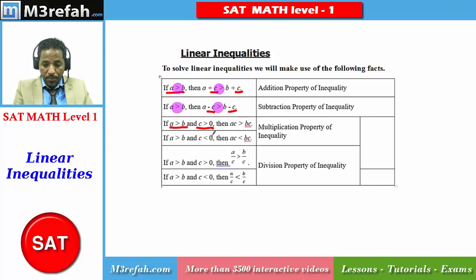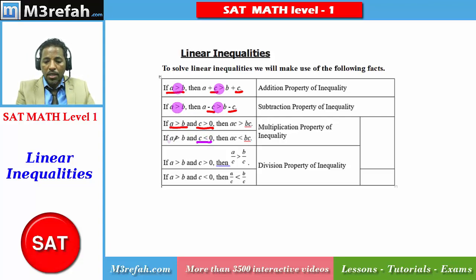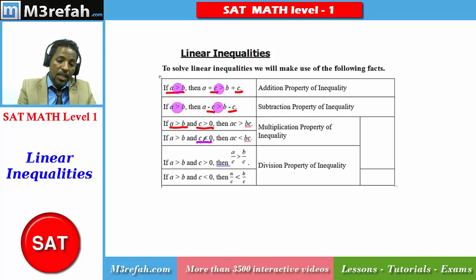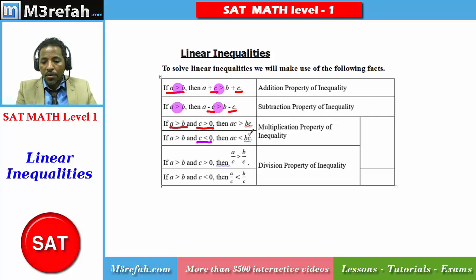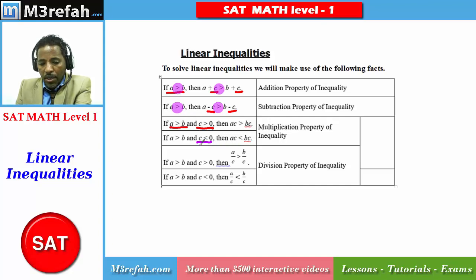But this case changes if the value of C is less than 0, meaning C is negative. So if A is greater than B and you multiply both A and B by a number which is negative or less than 0, then the greater than sign reverses into a less than symbol. So A greater than B results in AC less than BC when you multiply by a negative number or a number less than 0.